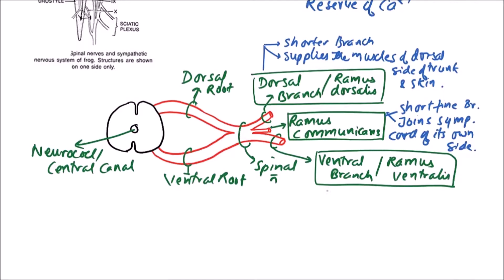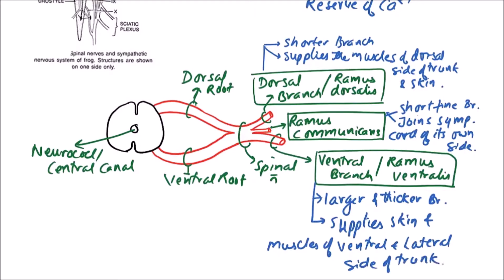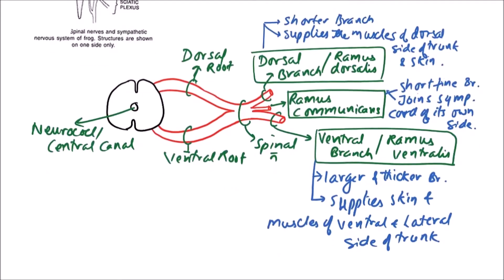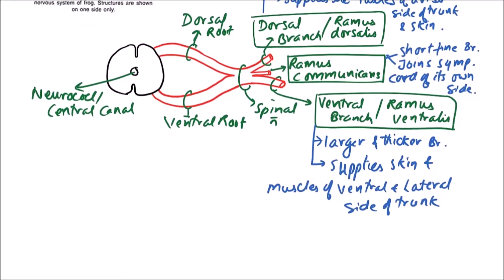And it joins the sympathetic cord of its own side. Then the ventral branch or ramus ventralis, it is the larger and thicker branch. An important thing is that it supplies skin and muscles of ventral and lateral side of trunk, so it is supplying a larger area. That's why it is larger in size or thickness.